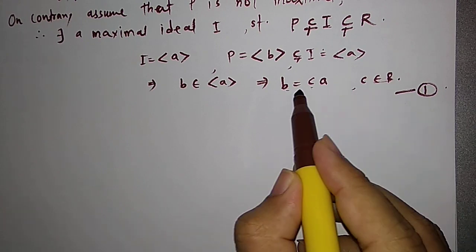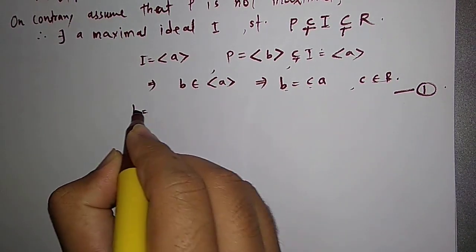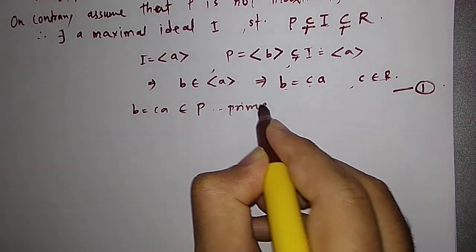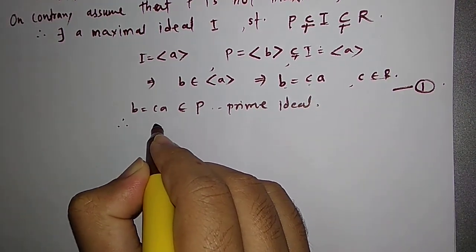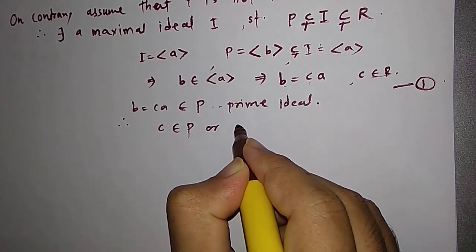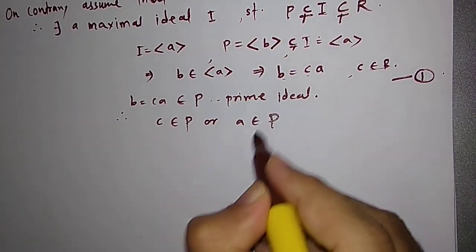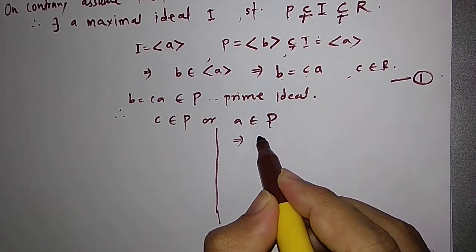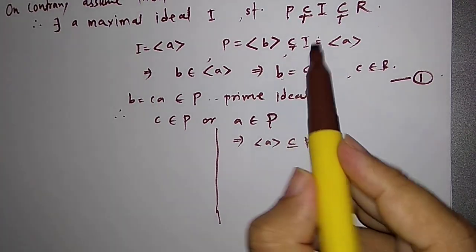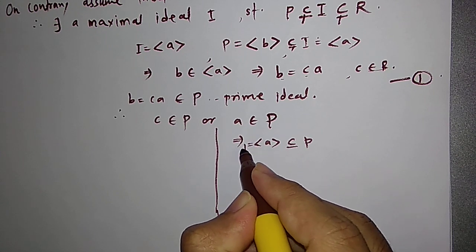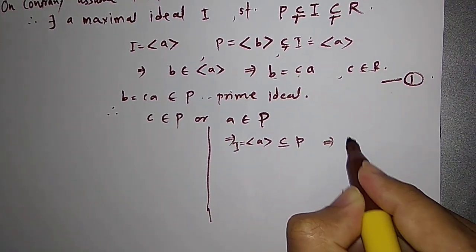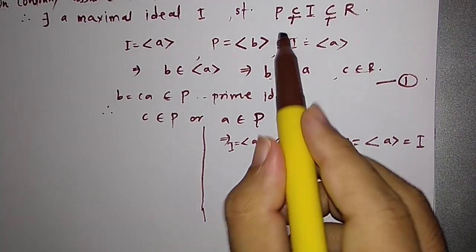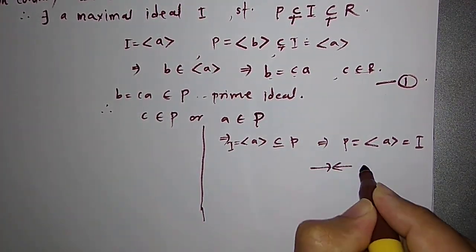Now we know that P is a prime ideal and b = ca belongs to P. Therefore, either c belongs to P or a belongs to P. Let us consider these two cases. If a belongs to P, that means the ideal generated by a is a subset of P. But we already know that P is a subset of I = (a), so that would mean P equals (a) which is I. But that is a contradiction because P was strictly inside I.